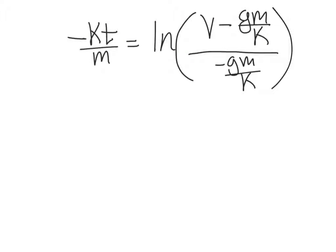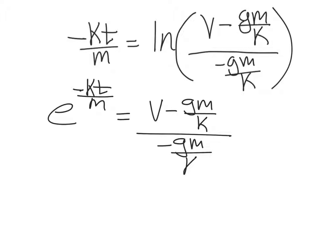So this is what we're left with after we apply that property of logarithms and do our division. You might be tempted to simplify some of the inside of the logarithm right now. Don't. It'll work itself out in just a moment. Rather than simplifying, what we're going to do is move the ln to the other side, effectively bringing the other side as e to the negative kt over m for the exponent. And now the log is gone from the right side. And we have v minus gm over k divided by negative gm over k.